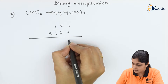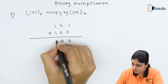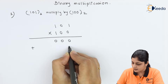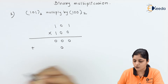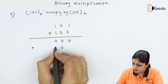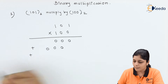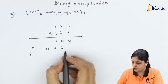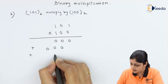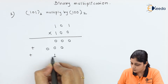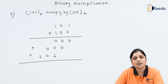Consider the first 0 term — 0 multiplied by all the terms will give you 0. Then consider the second 0 term in the second position — again all terms are 0. For the 1 term, you multiply by 1, starting from this side, leaving the two rightmost places vacant, writing 1, 0, and 1.